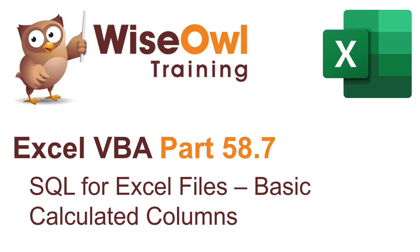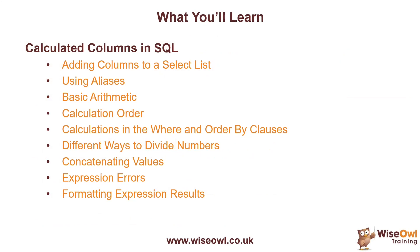Welcome to this Wise Owl Excel VBA tutorial. In this part of our series on writing SQL for Excel files, we're going to look at how to create basic calculated columns. We'll start with how to add a column to a select list and use an alias to identify the value you've calculated. We'll go over basic arithmetic, calculation order, and how to add calculations to both the WHERE and ORDER BY clauses.